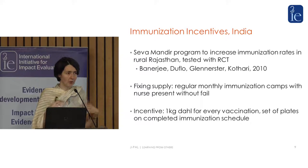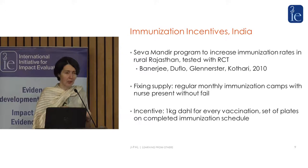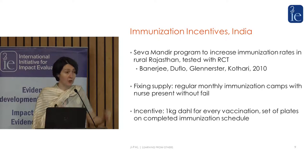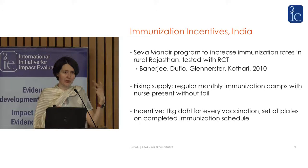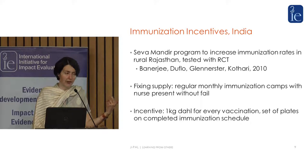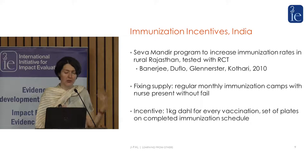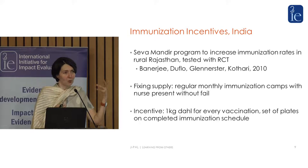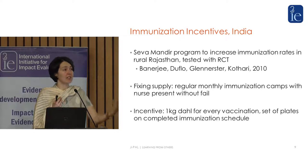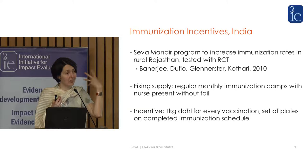One was to what extent the very low immunization rate was due to problems of supply. We did some descriptive work first and found that up to 40% of clinics were closed on any random visit because the nurses weren't there — so there was clearly a supply problem. We also looked at the demand side and whether a small incentive could increase the demand for immunizations. In this case, we gave a kilogram of dal for every vaccination. We also gave a different incentive at the end of the program — a set of plates — influenced by behavioral theory around the salience of completing the immunization schedule.